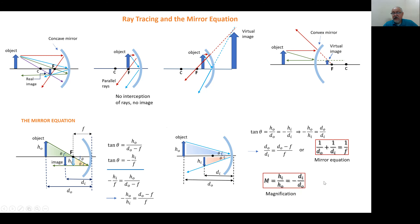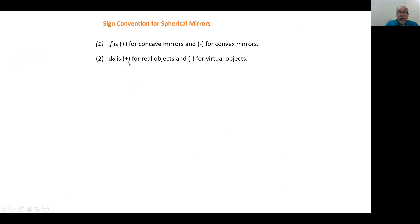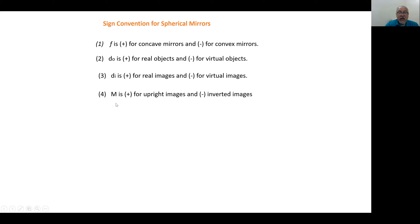Now let's go to sign convention. The focal length is positive for concave mirrors and negative for convex mirrors. dO is positive for a real object and negative for a virtual object. dI is positive for real images and negative for virtual images. Magnification is positive for upright images and negative for inverted images.